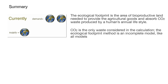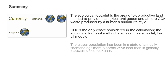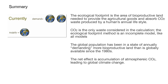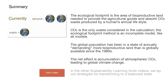The ecological footprint is the area of bioproductive land needed to provide agricultural goods and absorb CO2 waste produced by a human's annual lifestyle. CO2 is the only waste considered in the calculation, making the ecological footprint method an incomplete model. The global population has been demanding more bioproductive land than is globally available since the 1980s, with the net effect being an accumulation of atmospheric CO2 leading to global climate change. Future videos will lay out strategies for transitioning to a balanced state.